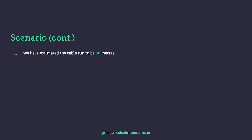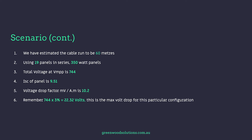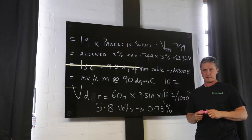We've estimated the run at 60 metres, using 19 panels in series, a voltage at maximum power point of 744 volts, a short circuit current of 9.51 amps, and a millivolt per amp metre Volt Drop of 10.2. That gives us 22.32 volts to play with — 744 times 3%. It's very important to go through the process to understand what you're doing, then check your results with one of the many online calculators available for DC Volt Drop.